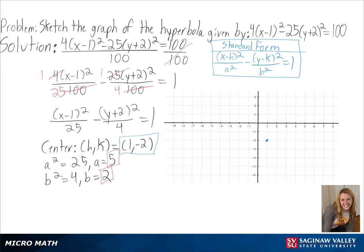Now we can sketch our central rectangle that will have side lengths of 2a and 2b and will be centered at 1 negative 2. We can then sketch our asymptotes since they will pass through the corners of our rectangle and we can use our origin and vertices to find their equation. Finally, using our vertices and asymptotes, we can sketch our hyperbola and our graph is finished.